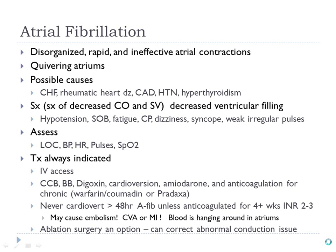Ablation surgery involves going into the heart and using a device that singes the conduction nerves and tissue in hopes of slowing down the atrial involvement. In AFib, like AFlutter, it's a re-entry problem — the SA node fires but the electrical impulse just circles around in the atrium and doesn't get down to the ventricle. The ablation can sever that part of the electrical conduction system causing the problem.